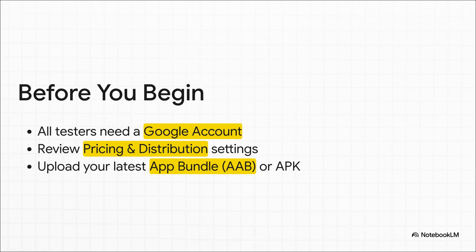Before you even start, a quick prep checklist is going to save you a ton of time. First, make sure every single one of your testers has a Google account. Second, do a quick double-check of your app's pricing and distribution settings. And finally, have your latest app build — your AAB or APK file — ready to go. Getting this stuff sorted out first just makes the whole process so much smoother.